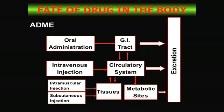Here's the ADME picture — the fate of drug in the body. There are four ways to get drugs into the body. Oral administration goes to the gastrointestinal tract. Some drug in the GI tract is immediately excreted through the kidneys. Some drug moves from the GI tract into the circulatory system, and some can go back from the circulatory system into the GI tract.